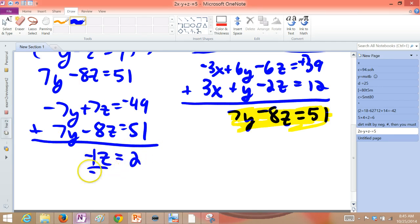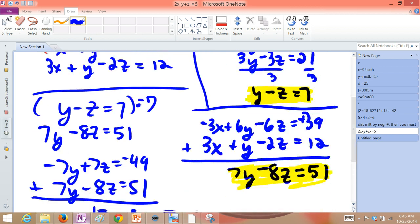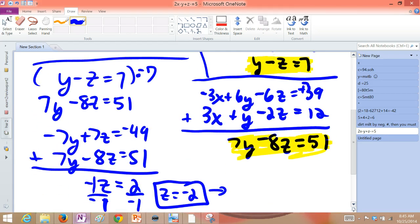We get the fact that negative z is positive 2. Negative 1 times z, so divide by negative 1. And it turns out then that z is negative 2 after all that work. Good job.